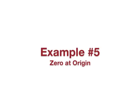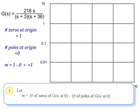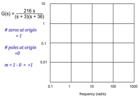Now let's look at an example where there is a zero at the origin. The transfer function for this example is G of s equals 216s over (s plus 3) times (s plus 36). This has one zero at the origin and no poles at the origin, so m is equal to plus 1. It has a pole at minus 3 and a pole at minus 36.